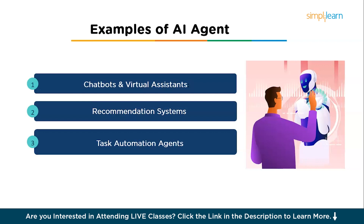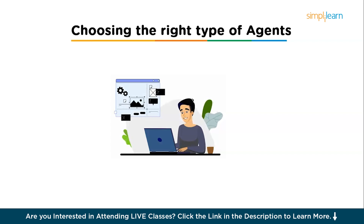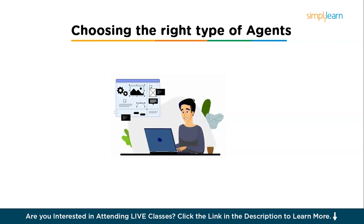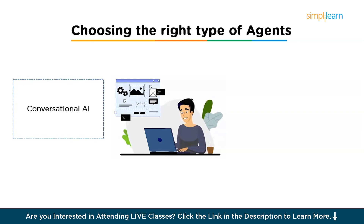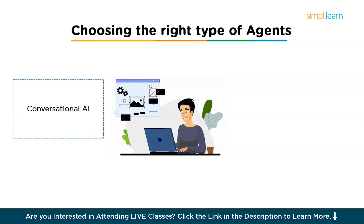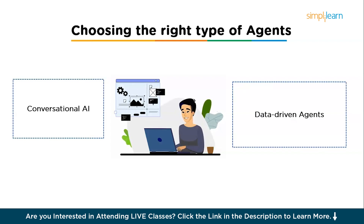When choosing the right type of AI agent to build, it's crucial to understand the different types based on functionality and intended application. Conversational AI agents are designed to engage in human-like interaction via text or voice — the most common examples are chatbots and virtual assistants, which can handle customer service inquiries or personal tasks.